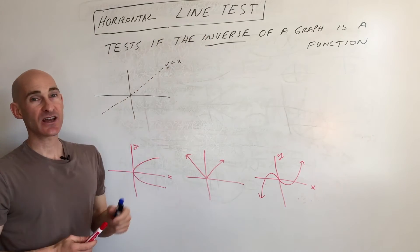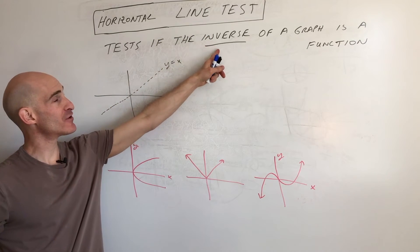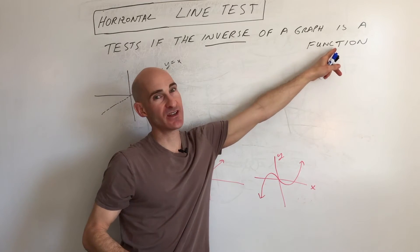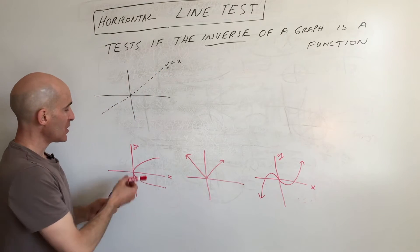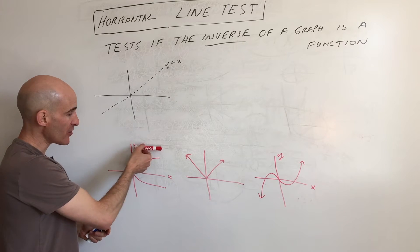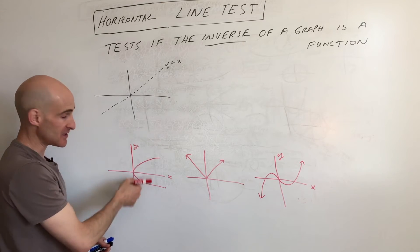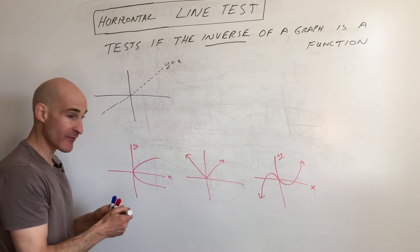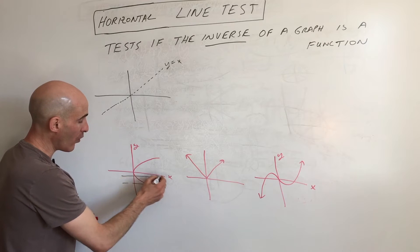What the horizontal line test tests for is if the inverse of a graph or the inverse of an equation is a function. What you do is take a horizontal line like this marker here and scan from low to high, and you see if the horizontal line crosses the graph at more than one point.